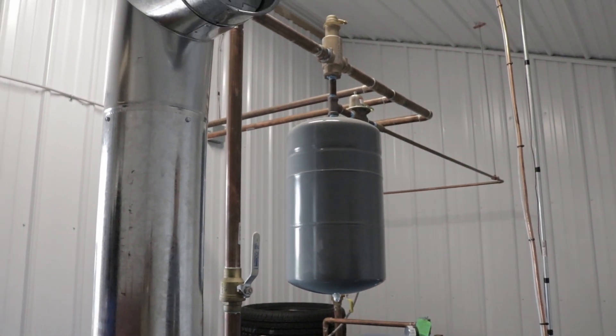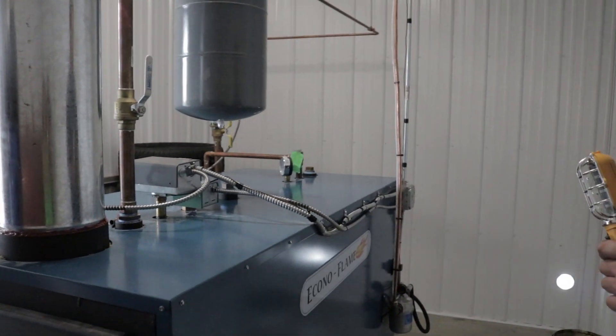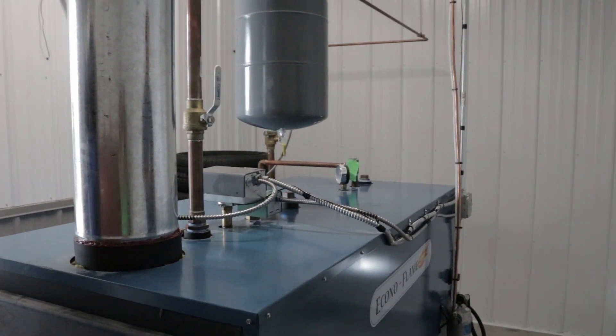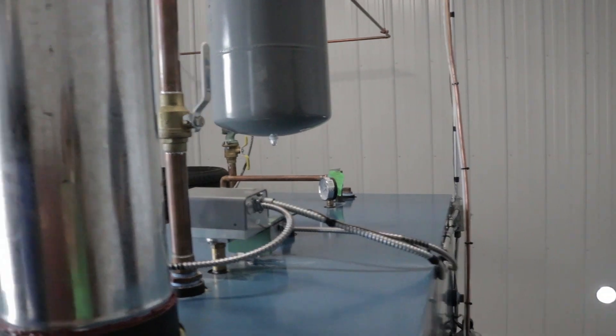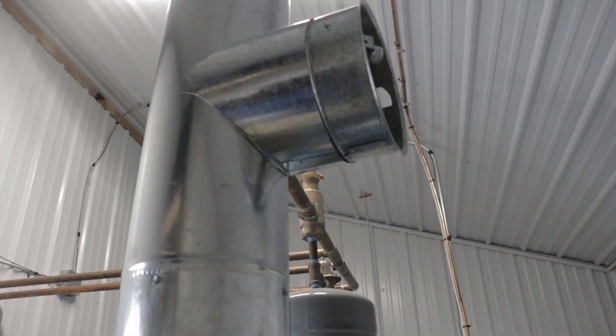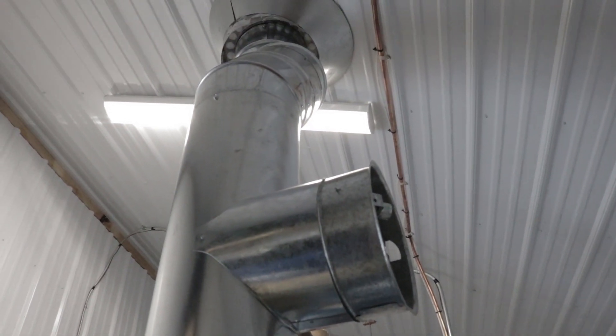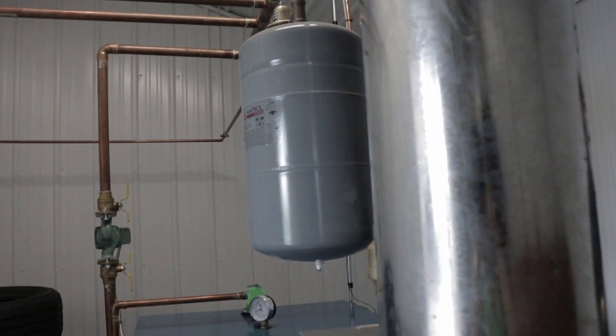The boiler itself is constructed out of quarter inch A36 plate steel, or boiler plate as it is also called, which is a good product. It is better even than stainless in that it does not crack like stainless will.